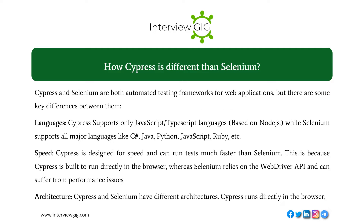How is Cypress different from Selenium? Cypress and Selenium are both automated testing frameworks for web applications, but there are some key differences. Languages: Cypress supports only JavaScript and TypeScript based on Node.js, while Selenium supports all major languages like C#, Java, Python, JavaScript, Ruby, etc.